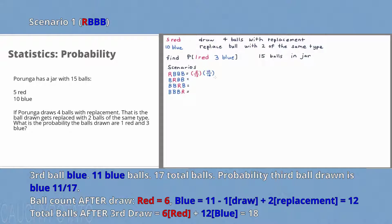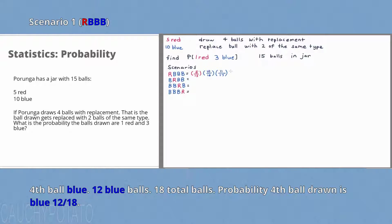Third ball drawn: following the with-replacement pattern, there's 1 less blue ball, so with the replacement rule the 1 blue ball drawn is replaced by 2. The remaining blue balls are 9 plus 2, which is 11. The total balls after the second draw is 15 plus 2, so 17 total balls for the third draw — giving 11/17 probability. The fourth ball drawn follows the same pattern: 12/18 probability for the fourth ball being blue.